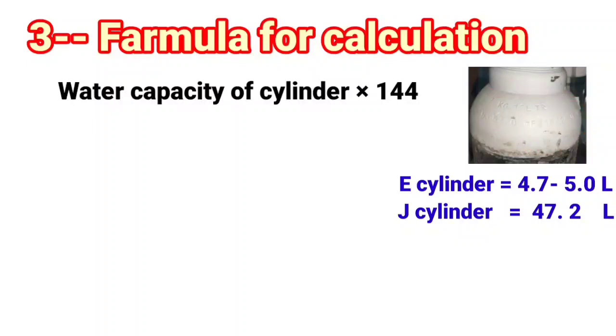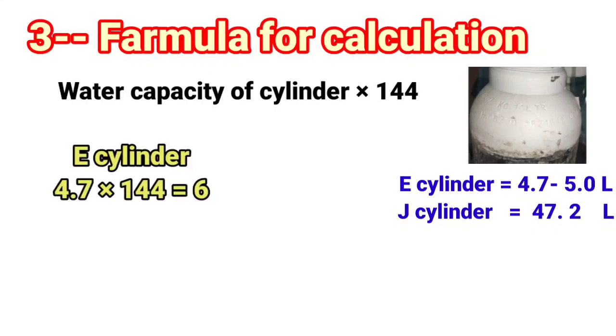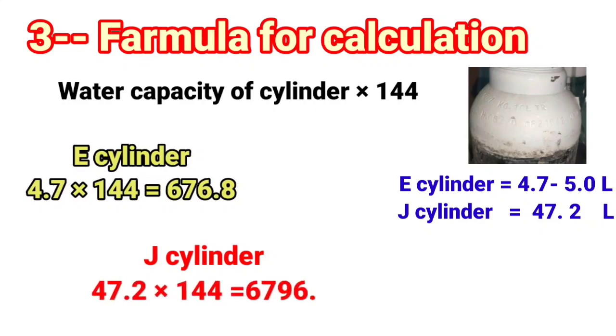Now we will calculate E-size cylinder capacity. It is 4.7 multiply by 144 is equal to 676.8 liters. It means E-cylinder has a capacity of 676.8 liters. J-cylinder will have 47.2 multiply by 144, is equal to 6796.8 liters. It's all about volume calculations. Now I will calculate the duration of time.